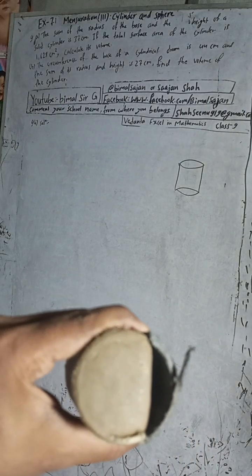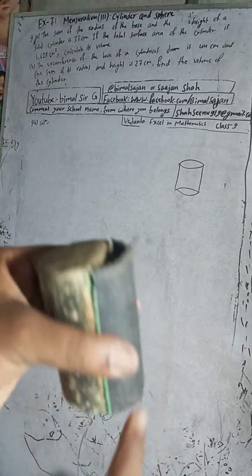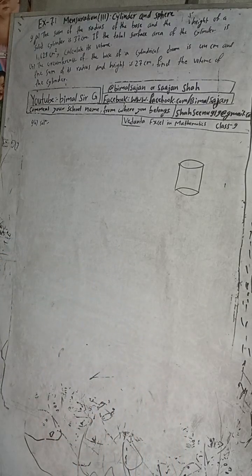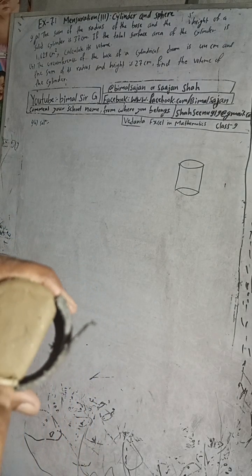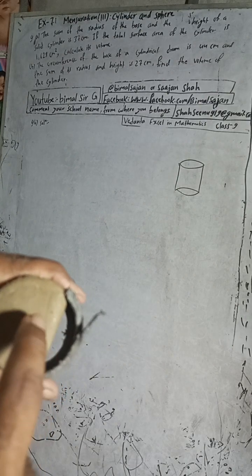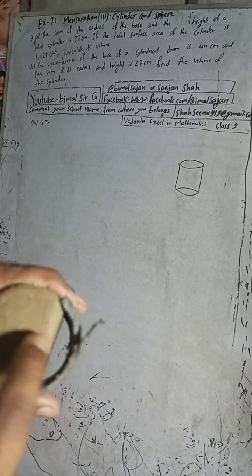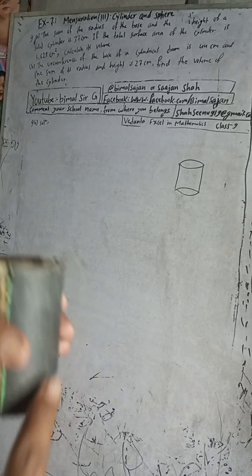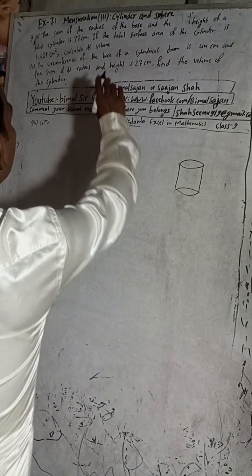The sum of its radius and height is given. The radius goes from the center to the edge, and the height is from top to bottom. So radius r plus height h equals 27. We have to find the volume. Let's start.